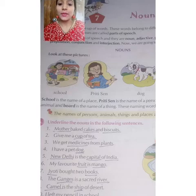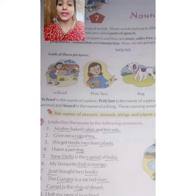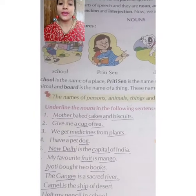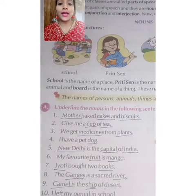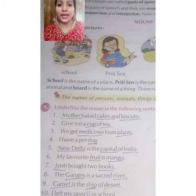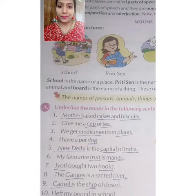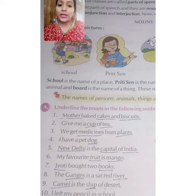Now underline the nouns in the following sentences. Exercise A — you have to underline the nouns. First sentence: 'Mother baked cakes and biscuits.' Mother is obviously a noun, and you will also underline cakes and biscuits — these are things, so they are nouns.